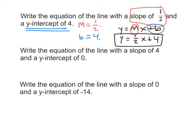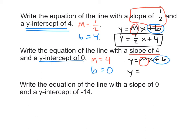The second example: slope is 4 and y-intercept is 0. To write the equation, I fill in my slope and y-intercept: y equals 4x plus 0. Notice we don't need that 0 — adding 0 doesn't change anything — so our equation is y equals 4x. It wouldn't be wrong if you left the plus 0, but it's better math if you don't.